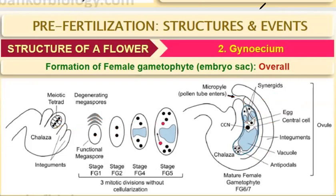Today I hope you understand what we have studied: gynoecium — which may be multi-carpellary or monocarpellary; in multi-carpellary, apocarpous or syncarpous. Then we studied stigma, style, and ovary — the ovary has the locule, in the locule is the placenta, and in the placenta are the ovules. Ovules can be single as in mango, or many as in watermelon. The ovule is attached to the placenta at the hilum, and the funicle is the stalk from which it is attached.